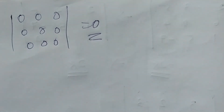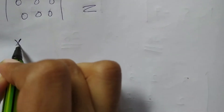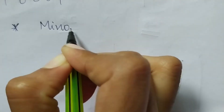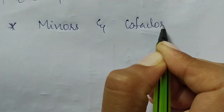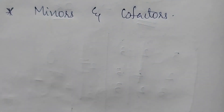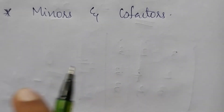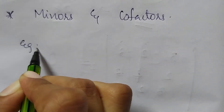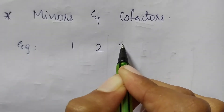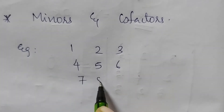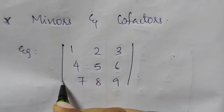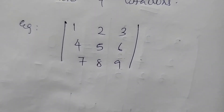Now we have an important topic: minors and cofactors. We will learn minors and cofactors for both 2 by 2 and 3 by 3 matrices. Let's take an example matrix: 1, 2, 3, 4, 5, 6, 7, 8, 9.